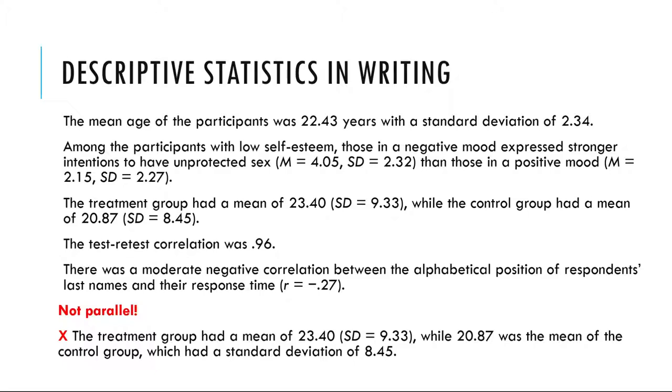Notice that when presented in the narrative, the terms mean and standard deviation are written out, but when presented parenthetically, in parentheses, the symbols M and SD are used instead. Notice also that it's especially important to use parallel construction to express similar or comparable results in similar ways. The third example is much better than the following non-parallel alternative. The treatment group had a mean of 23.4, with a standard deviation of 9.33, while 20.87 was the mean of the control group, which had a standard deviation of 8.45. That last one doesn't follow a similar pattern in describing the results and makes the sentence awkward and hard to read.